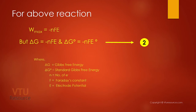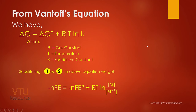Let us call the above equation as equation 2. From thermodynamics, we have the relationship which says that delta G equals delta G0 plus RT ln K, where R equals gas constant, T is the temperature, and K is the equilibrium constant.